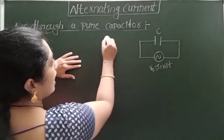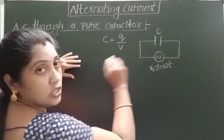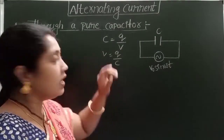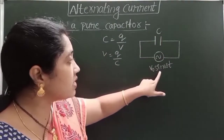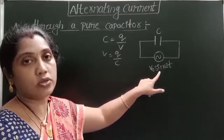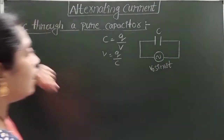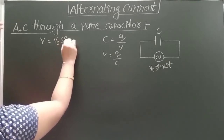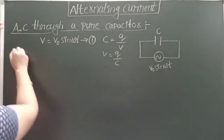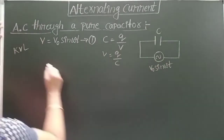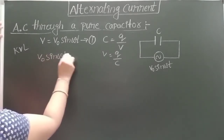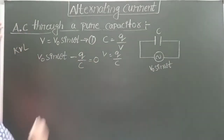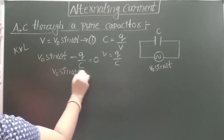We know the capacitance C = Q/V, so Q = CV. Applying Kirchhoff's voltage law: the instantaneous EMF of the source is V = V₀ sin(ωt) — equation 1. So V₀ sin(ωt) − Q/C = 0, which gives V₀ sin(ωt) = Q/C, and therefore the charge on the plates Q = CV₀ sin(ωt).